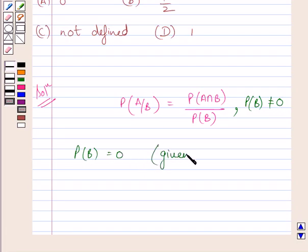Now, probability of B is equal to 0 implies that probability of A upon B is not defined.